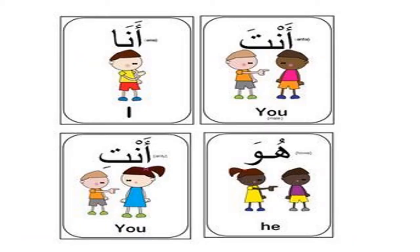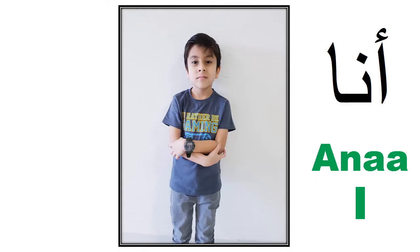Let me explain these pronouns in detail. Anna means I. For example, Anna is me — Husaifa. My name is Husaifa.